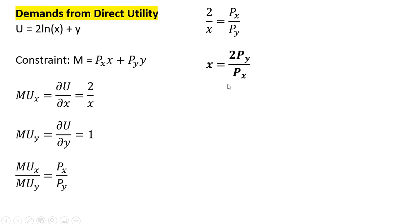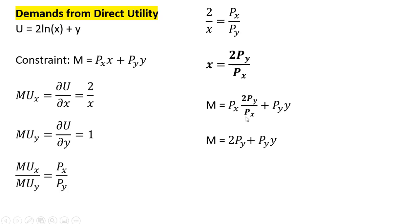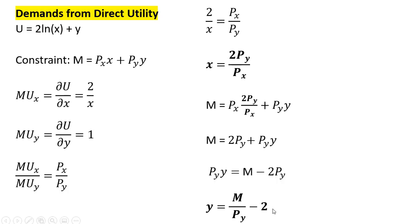To get the demand for good y, we take this result and plug it into our budget constraint. Where we have an x, we plug in 2 times the price of good y divided by the price of good x, then solve for y. The prices of good x cancel, and dividing through by the price of good y gives us the demand for good y.